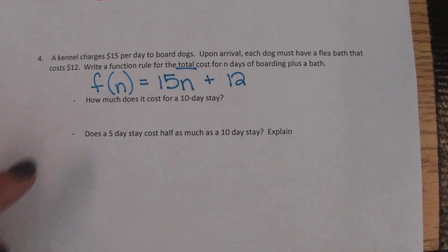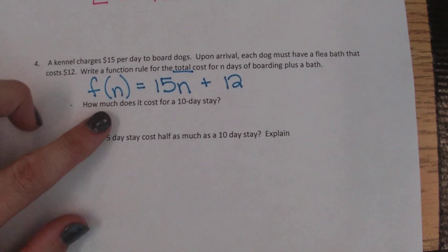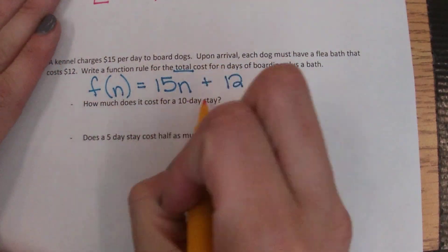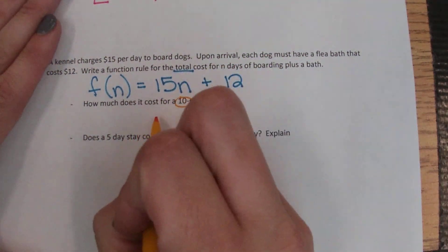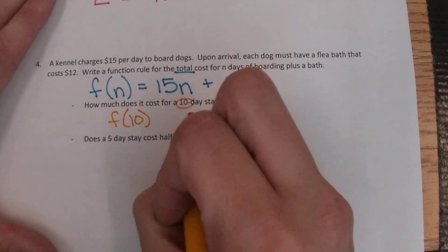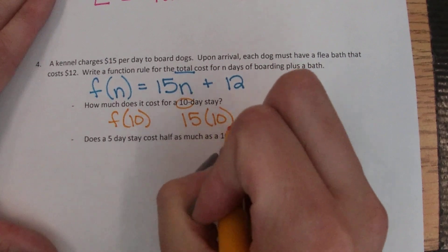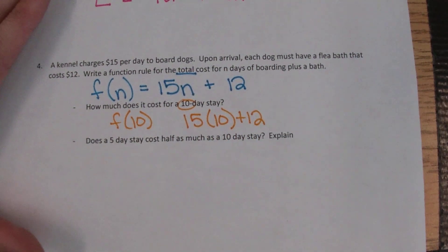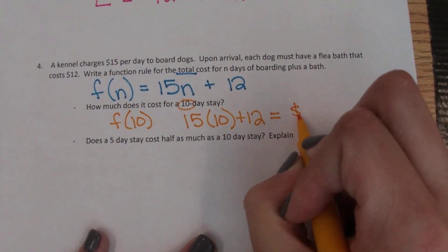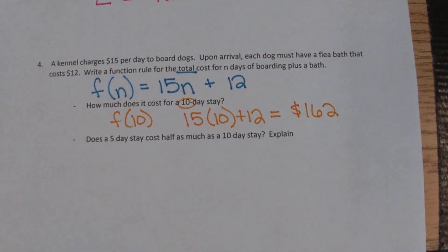Now once we have something and we've written a function rule from it or function notation, we can then calculate some things. So how much does it cost for a 10 day stay? If someone says okay now that I know this, how much will it cost for me to stay 10 days? Well we'll just evaluate this function for 10, so we'll do 15 times 10 plus 12, which would be 150 plus 12, we get 162 dollars.